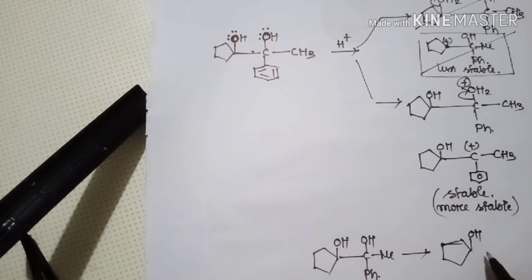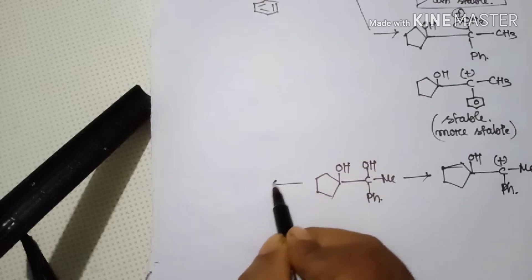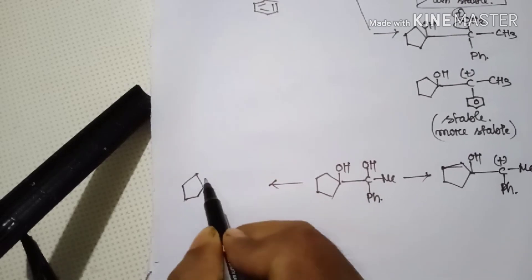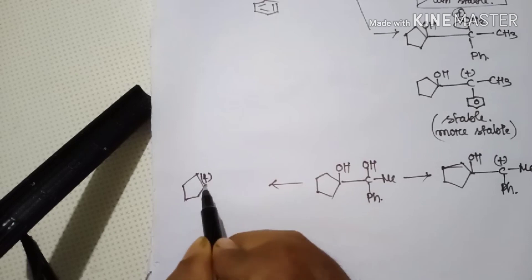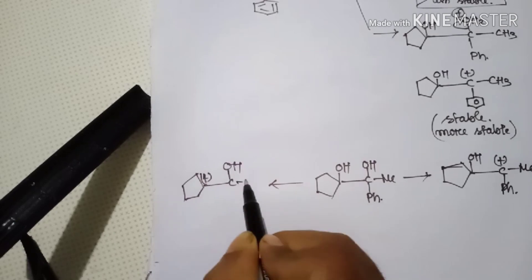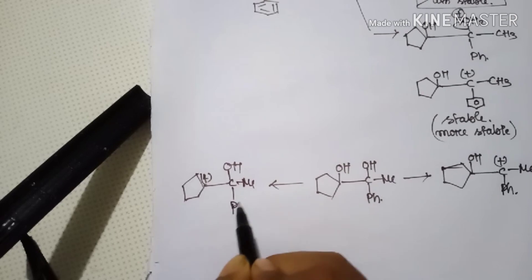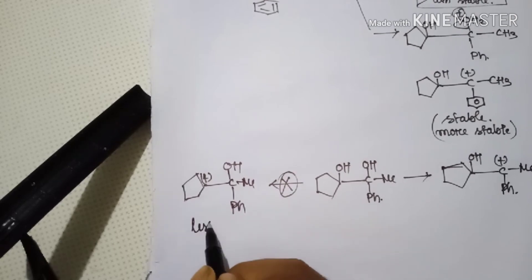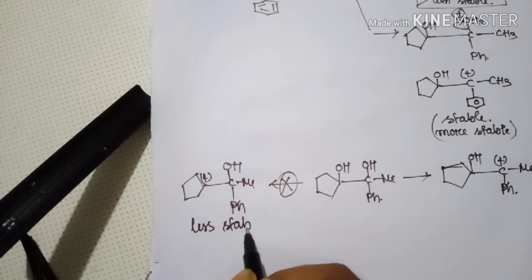We have OH to give H⁺ and C⁺. OH means methyl, pH means benzene. We have OH to give H⁺ and C⁺ — OH means methyl, pH means benzene.